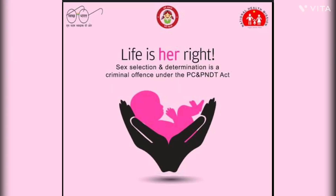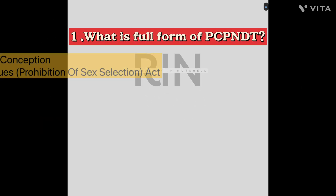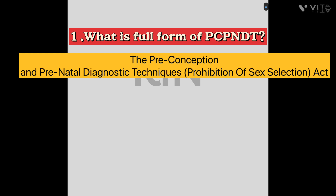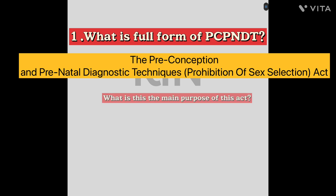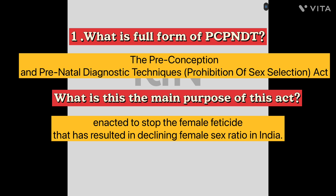The topic for today is the PCPNDT Act, which is one of the most important topics in the table viva session of radiology practicals. The first question is: what is the full form of PCPNDT Act? The full form is the Preconception and Prenatal Diagnostic Techniques (Prohibition of Sex Selection) Act. The main purpose of this act was to stop female feticide that resulted in a declining female sex ratio in India.